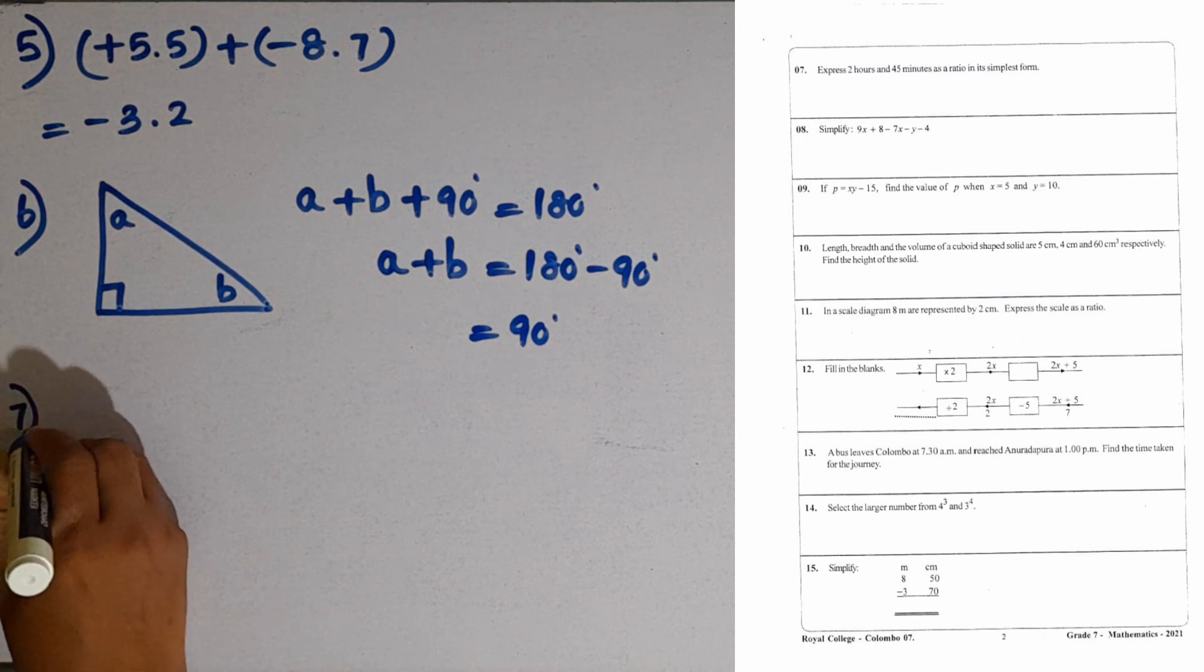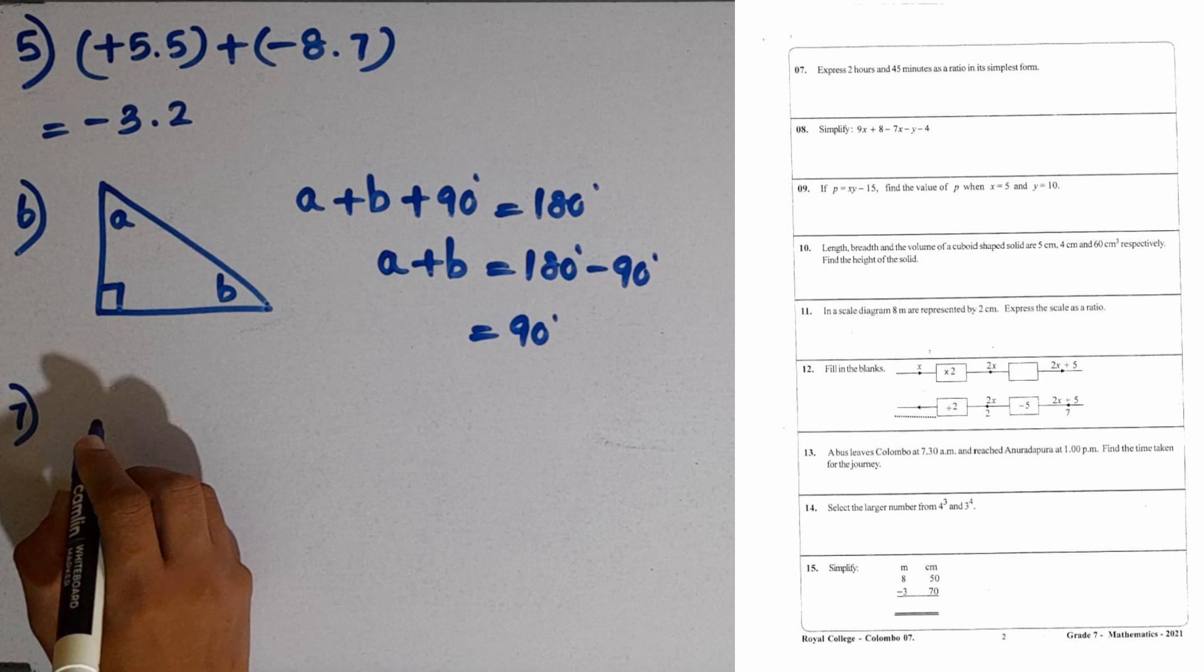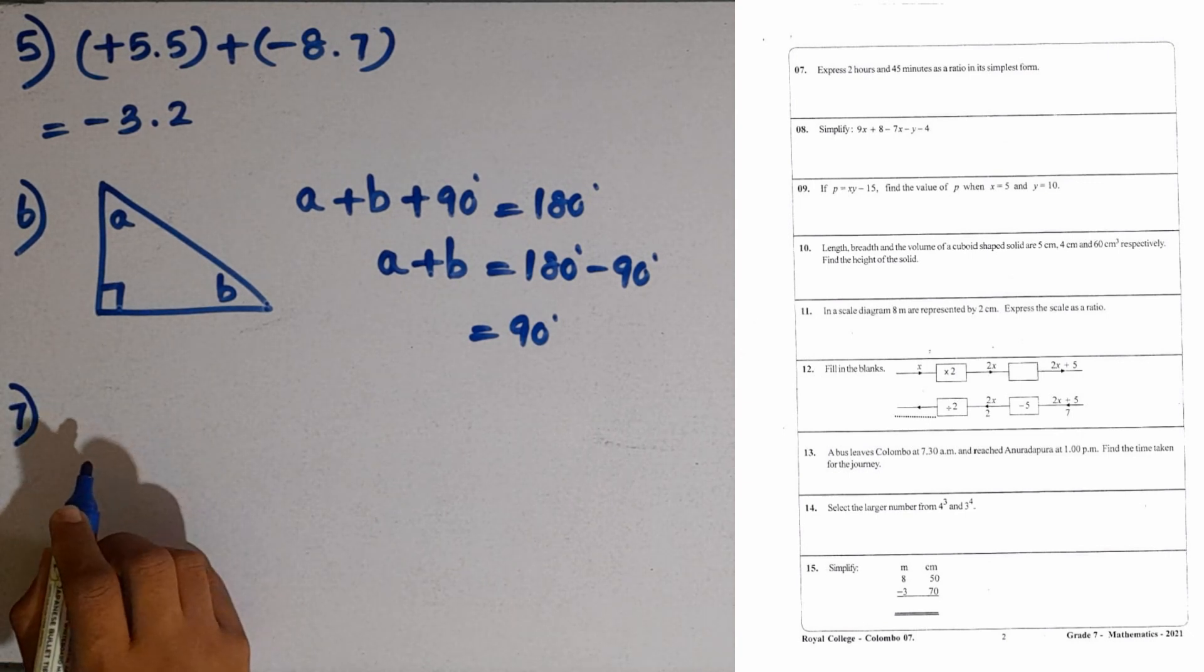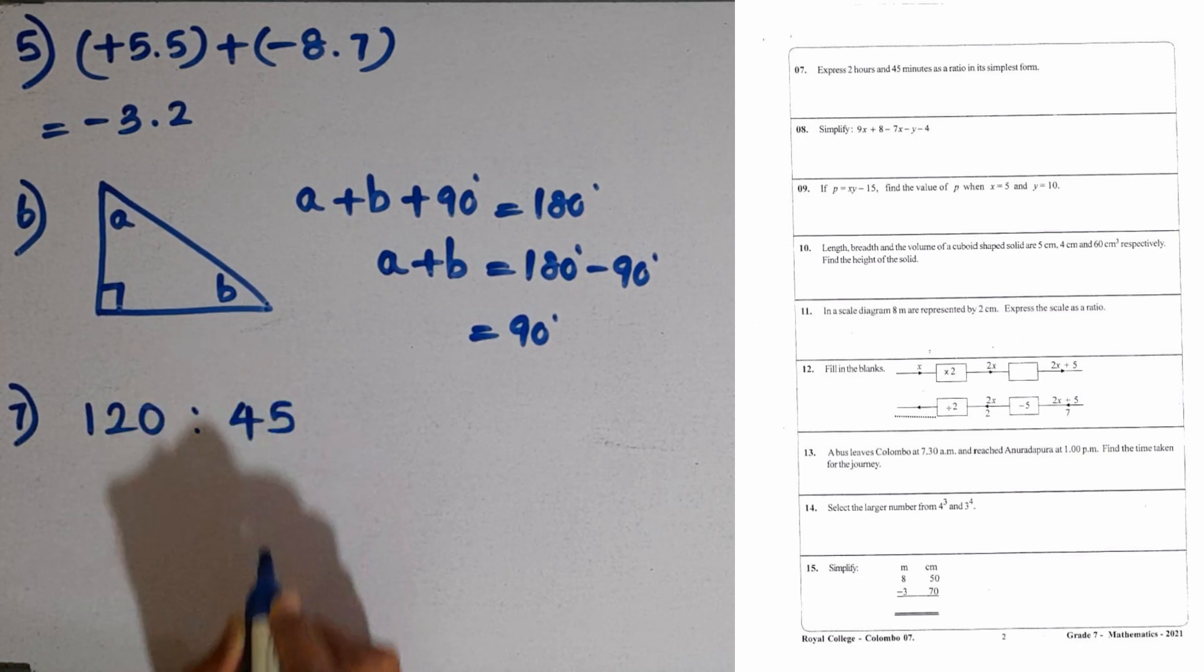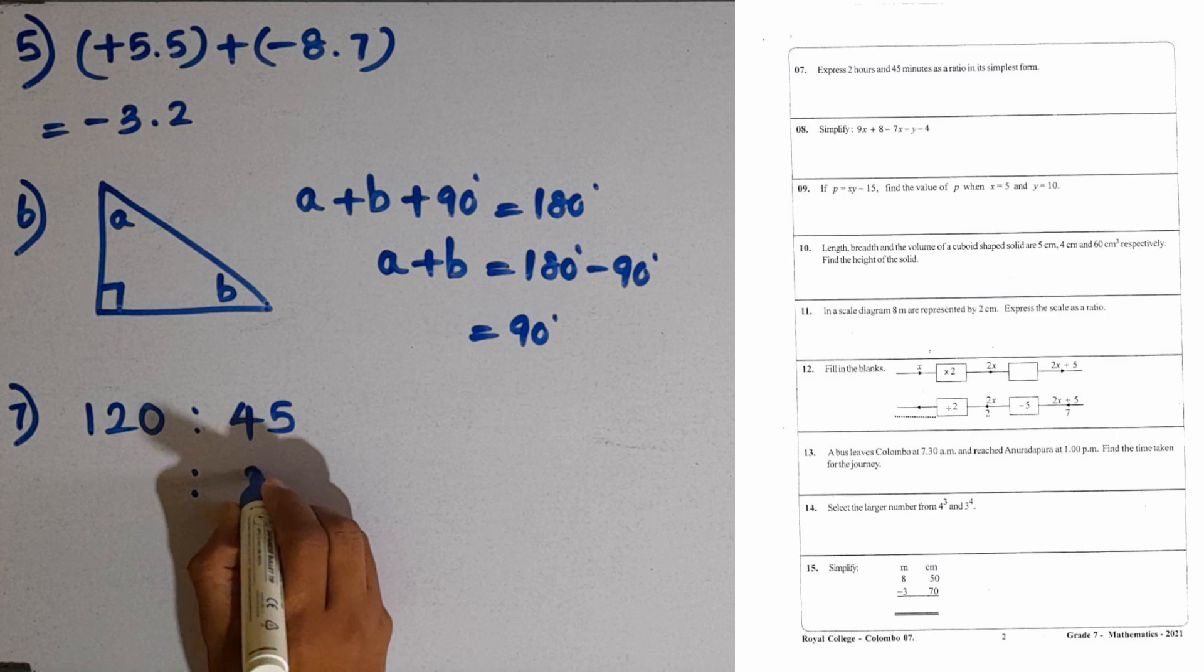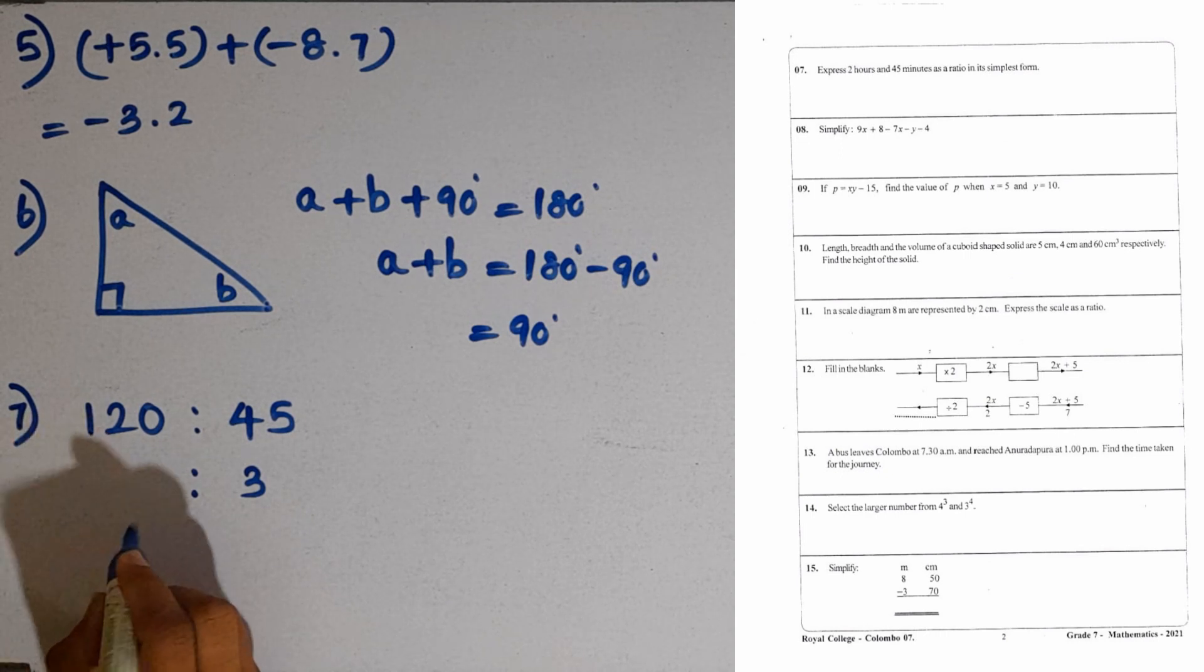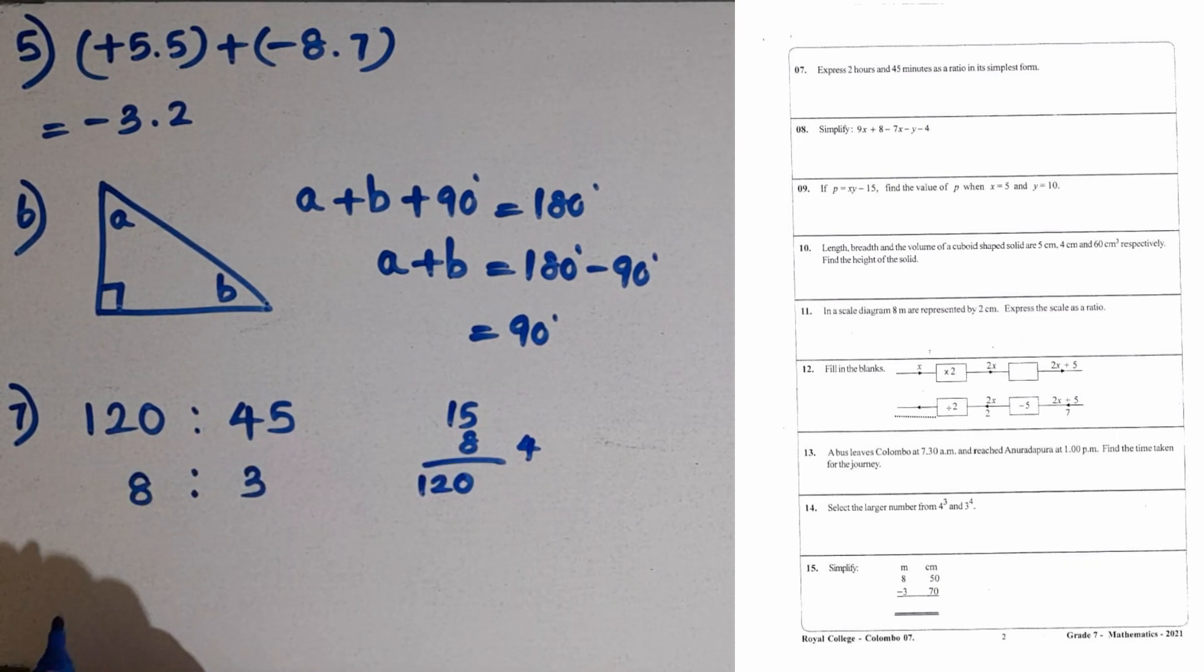Then question number 7. Express 2 hours and 45 minutes as a ratio in its simplest form. 2 hours 45 minutes. We have to convert both measures into the same unit, into minutes. 1 hour equal to 60 minutes. So, 2 hours equal to 120 minutes. 120 to 45. How can you simplify this one? We can divide by 15. Let's divide by 15. 15 times 3 is 45. Then for 120, how many 15s are there? For 30, 2 fifteens. There are 4 thirties here. So, 4 times 2 is 8. If you multiply 15 by 8, you get 120. So, this is the simplest answer, 8 to 3.